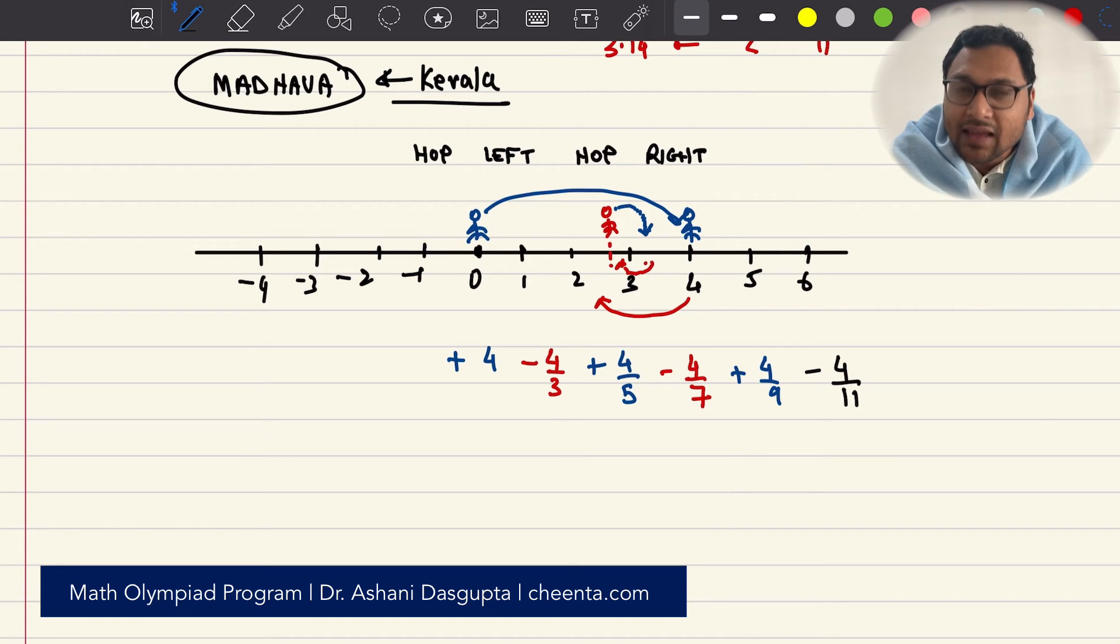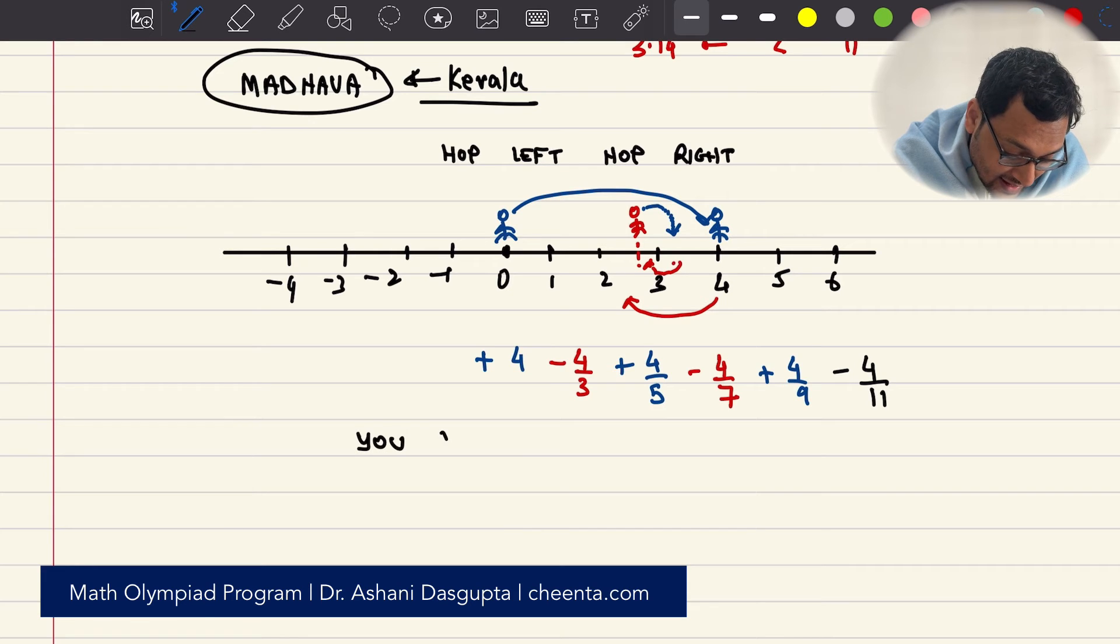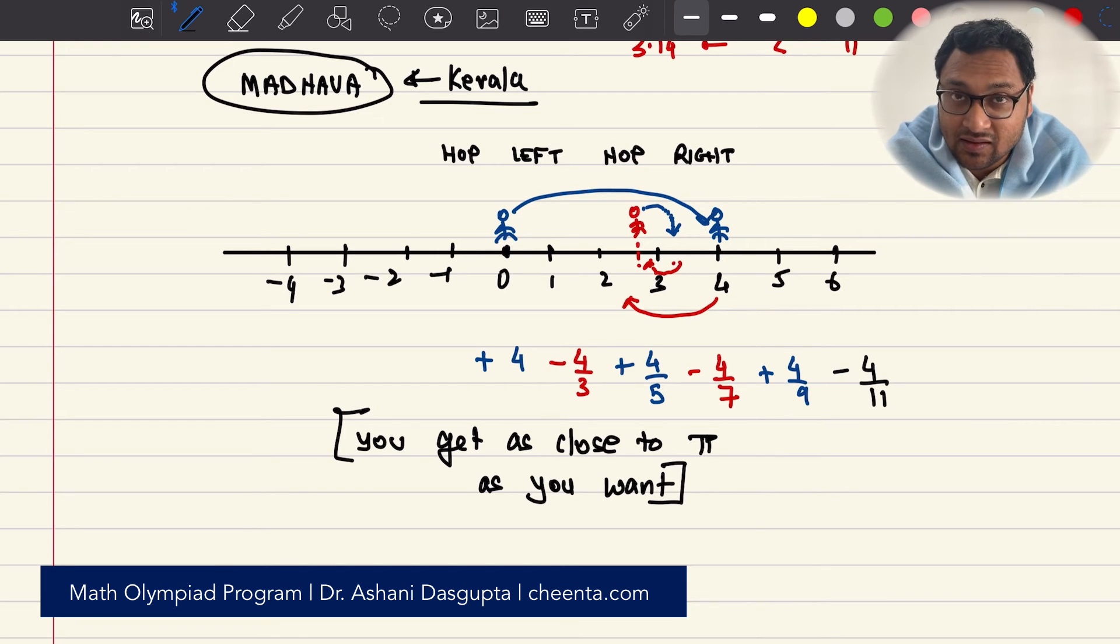Keep on moving. Then, something weird happens. You get as close to pi as you want. This is absolutely fantastic. Because this sentence, you get as close to pi as you want, is the meaning of a limit of a series or a sequence.